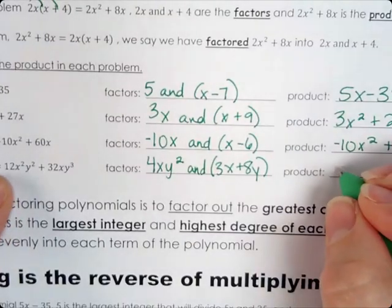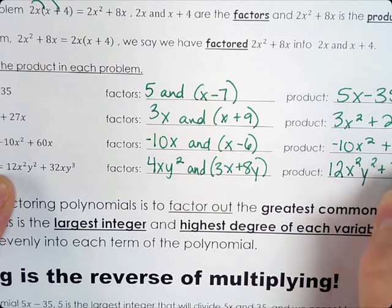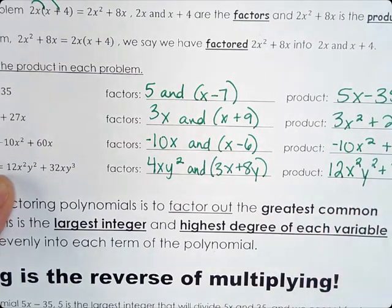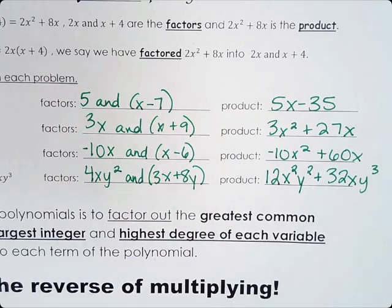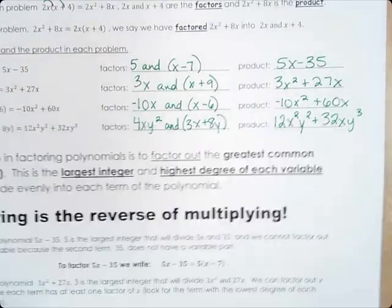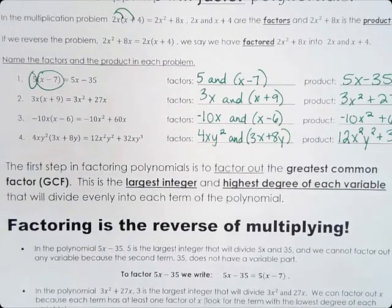And then the product is what is given after it is multiplied together. So now that we know what factors and products are, we are going to look at how we can factor out the greatest common factor. This GCF is the largest integer factor and highest degree of each variable that will divide evenly into each term of the polynomial.